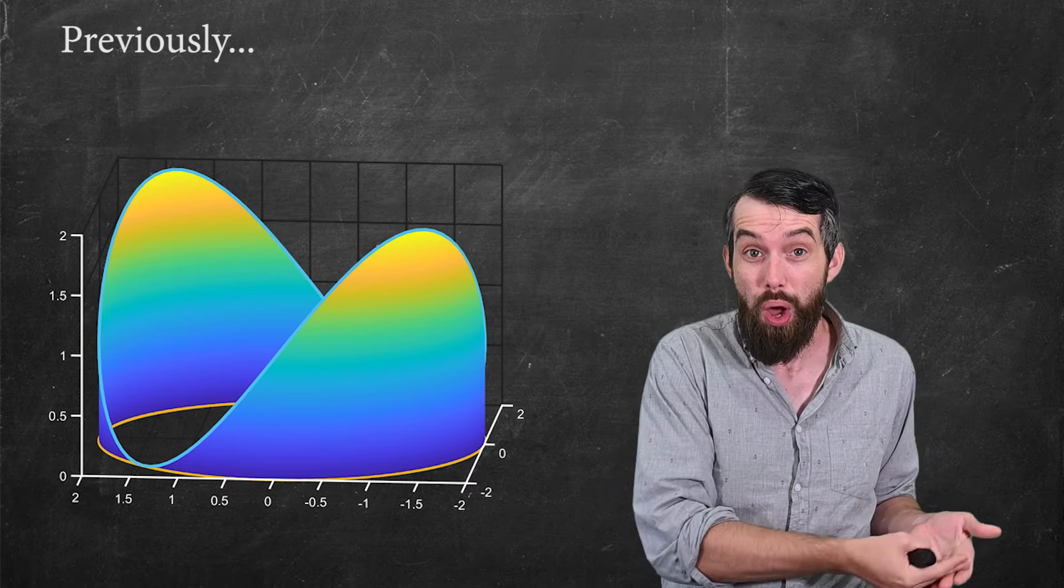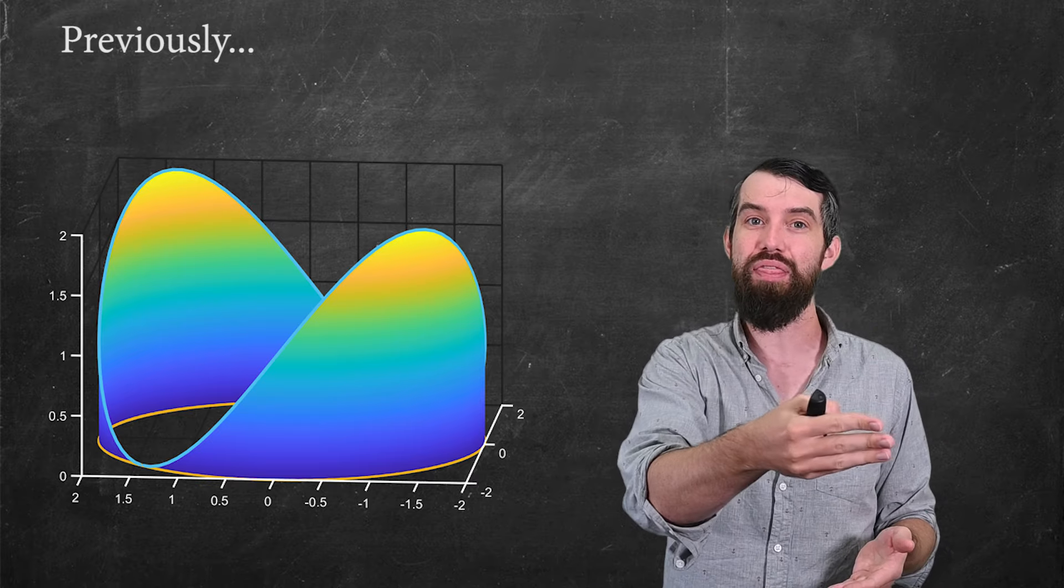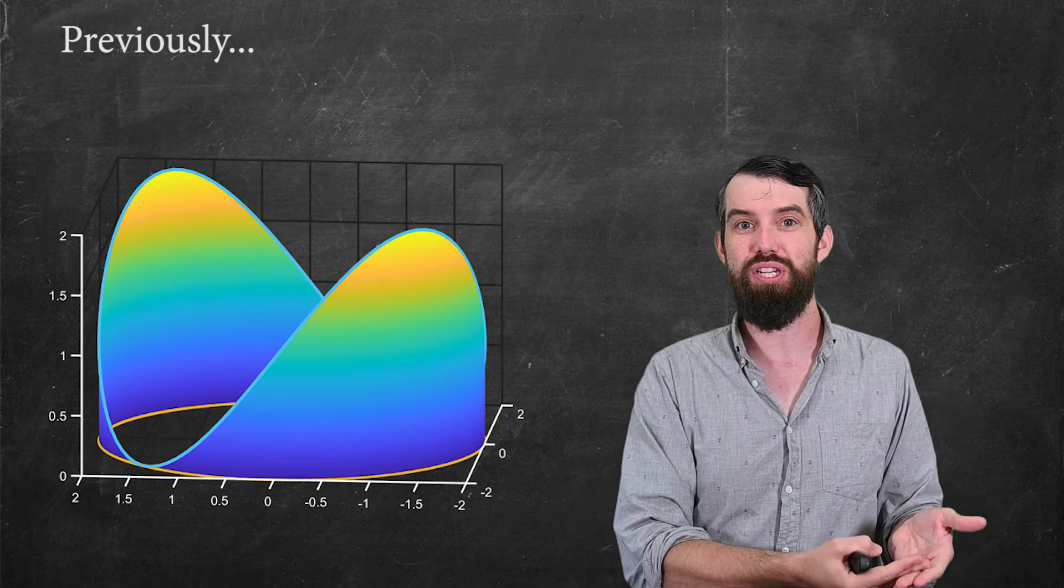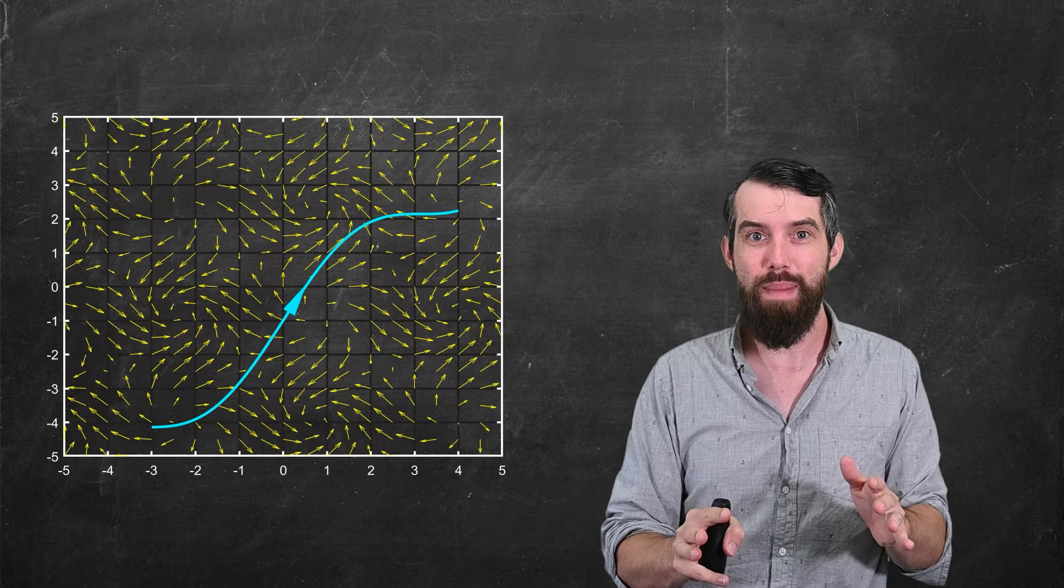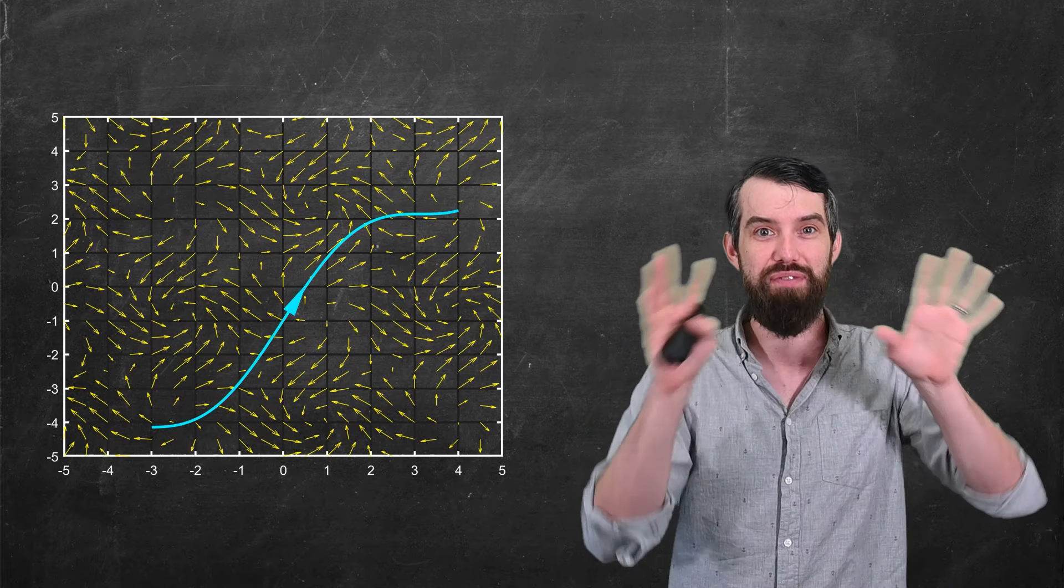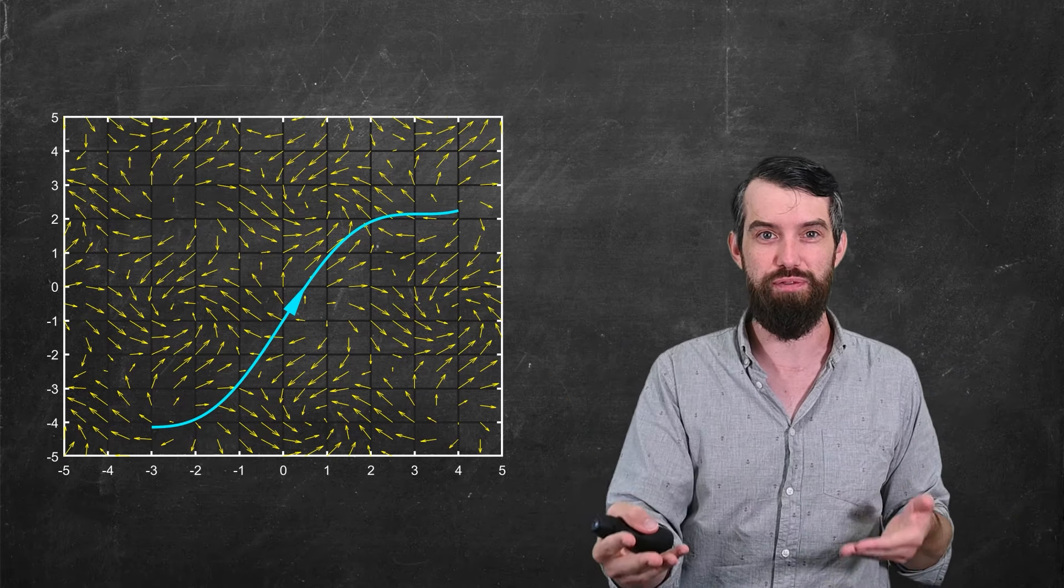When we previously talked about line integrals we would have some path and then we had some function that gave us sort of height above every point along that curve. But now we're imagining a scenario like this where we've got some vector field and we've got a curve that is moving through the vector field.